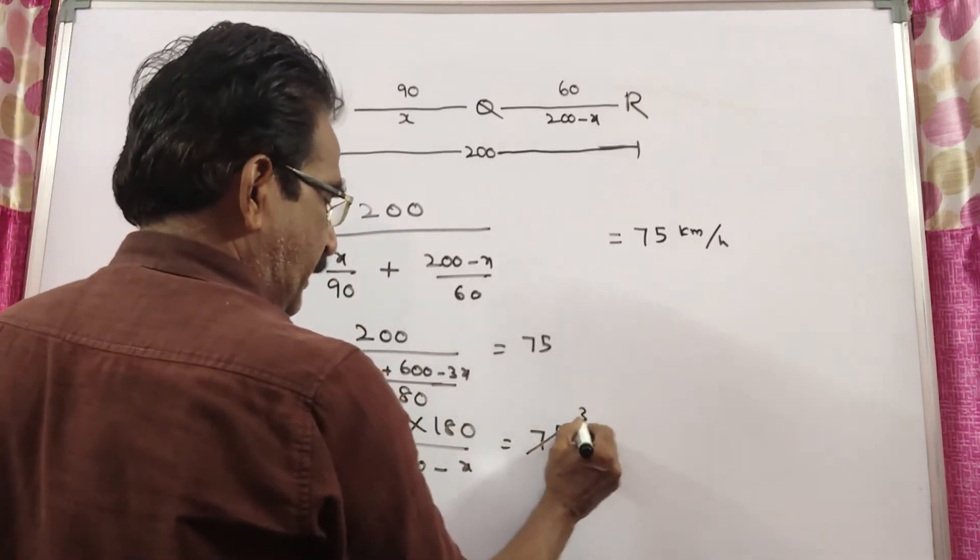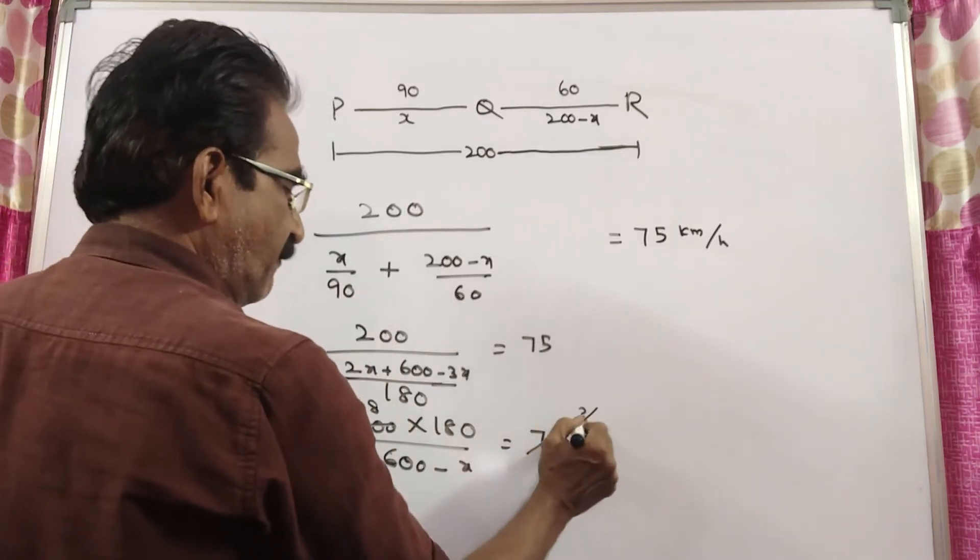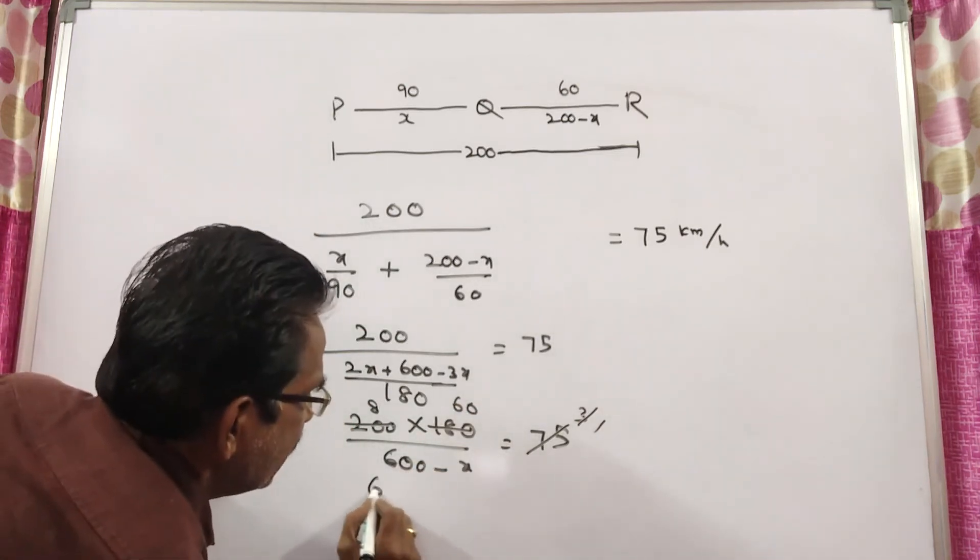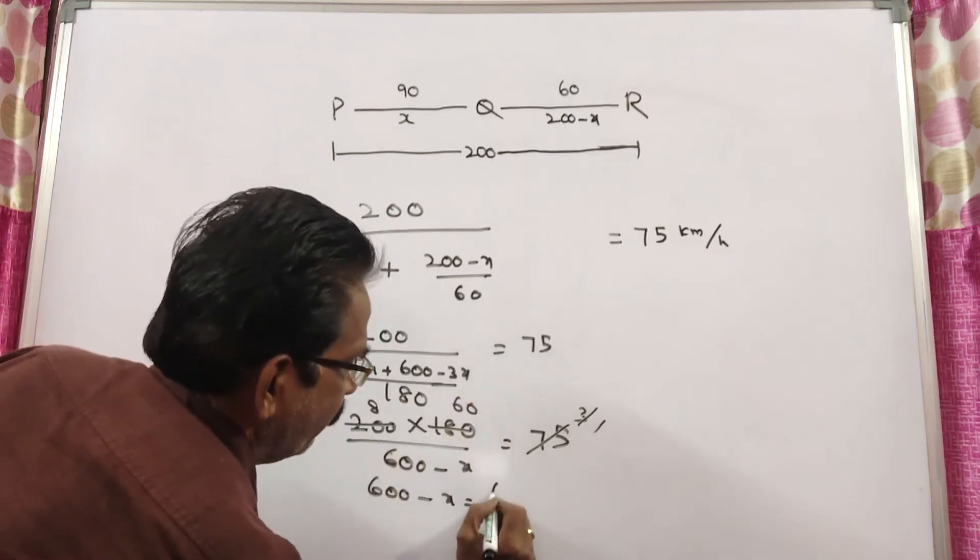Simplifying: 25 times 8 over 25 times 3, and 180 over 3 equals 60. So 600 minus x equals 8 into 60, which is 480.